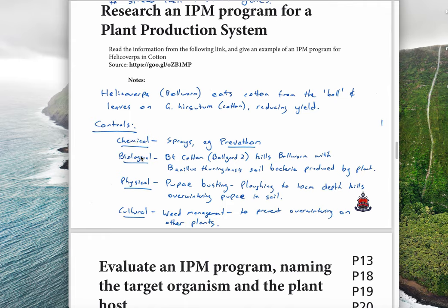Here's an example of an IPM strategy. A chemical example could be sprays, example Prevathon. Prevathon is the name of a spray that you can use on bollworm. Biological, of course we already know about BT cotton or Bollguard. Bollguard 2 is the current one. It kills bollworm with Bacillus thuringiensis. It's important that you know this. It's a soil bacteria that is now produced by the plant because it is genetically modified and it kills the bollworm.